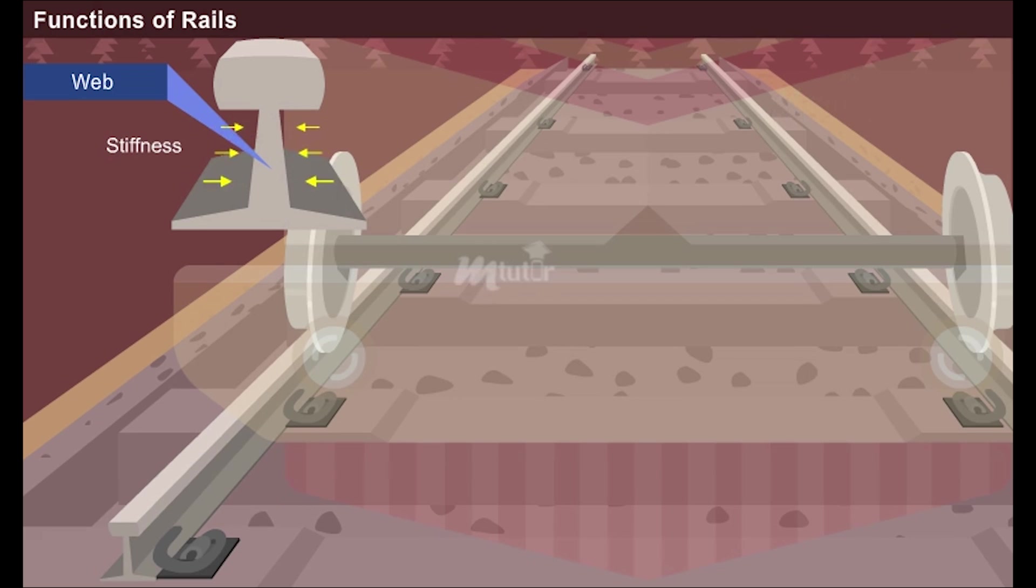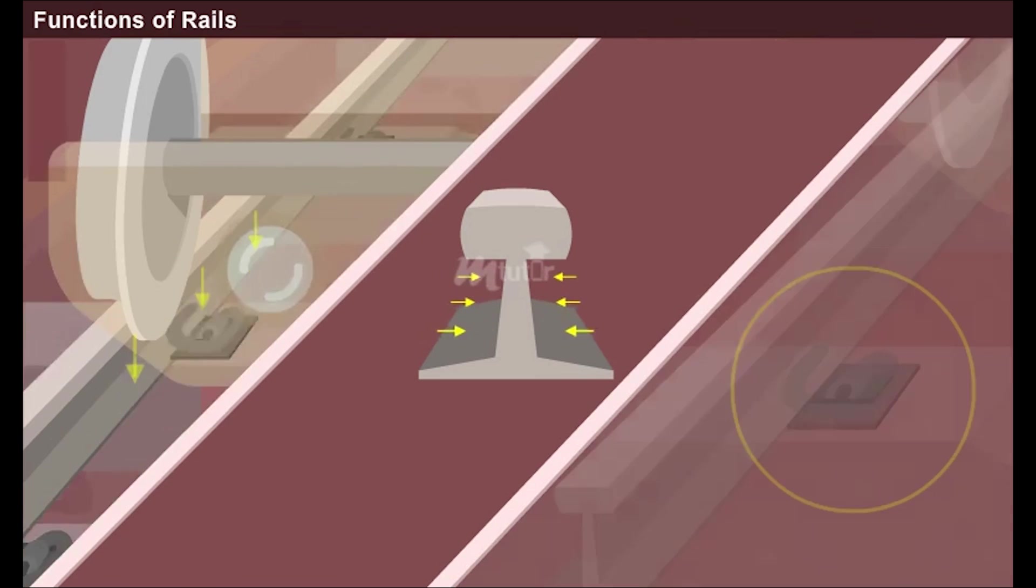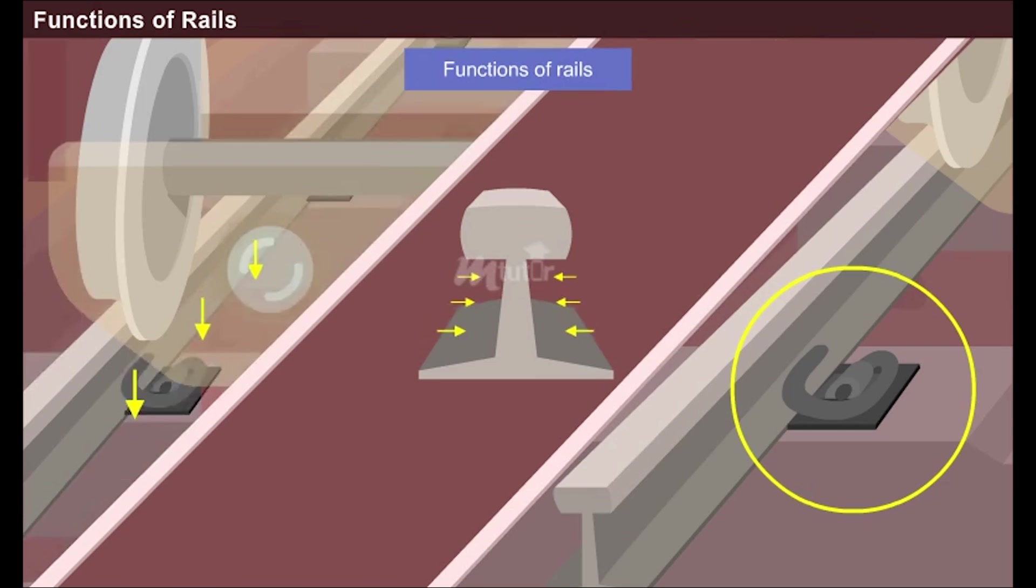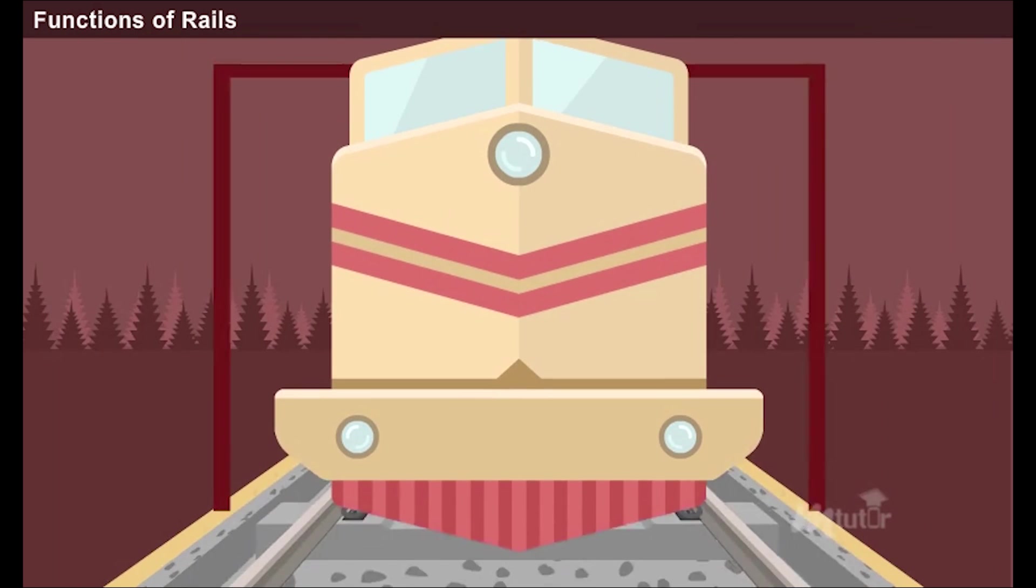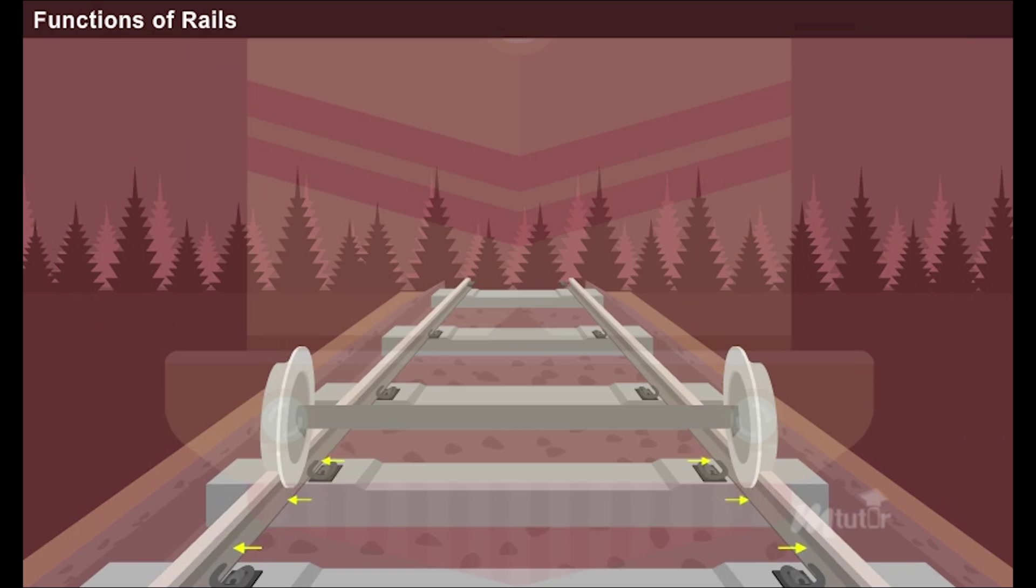In addition to the stated individual functions, the rails perform the following functions in general. They serve as a lateral guide for the movement of train wheels by providing a leveled and continuous surface.